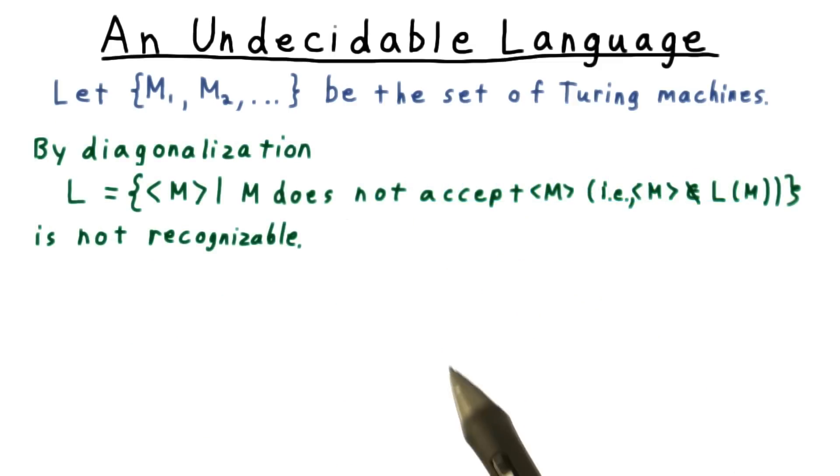The end result then, is that the language L, of string descriptions of machines that do not accept their own descriptions, is not recognizable.